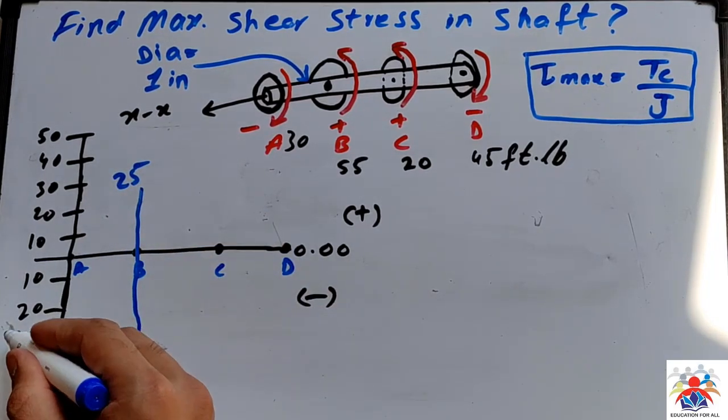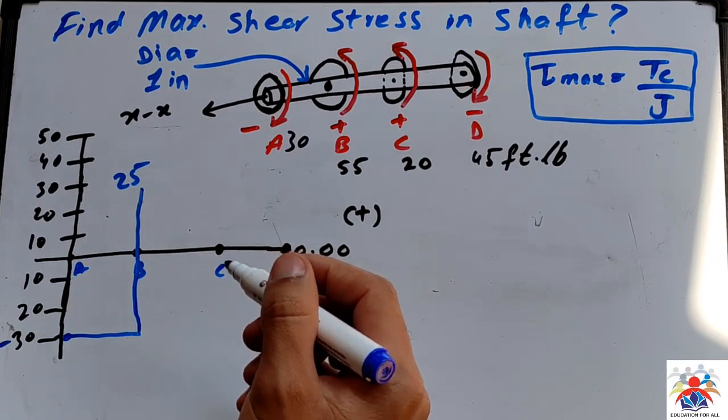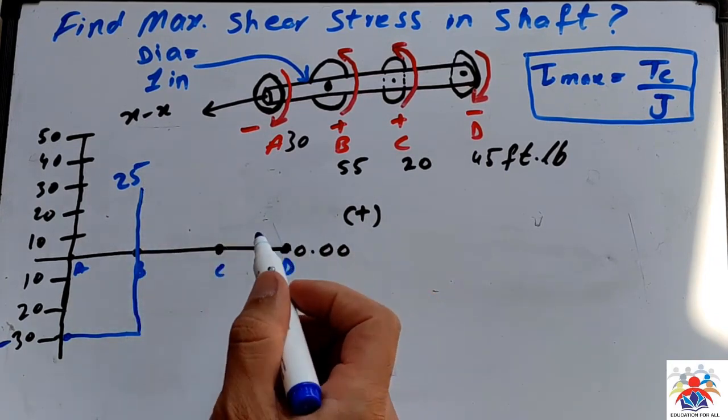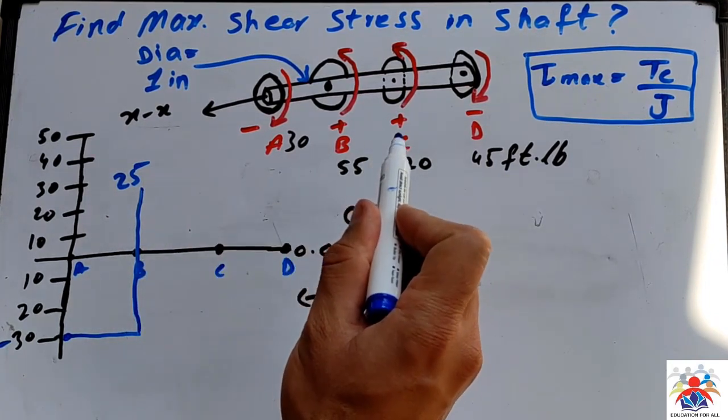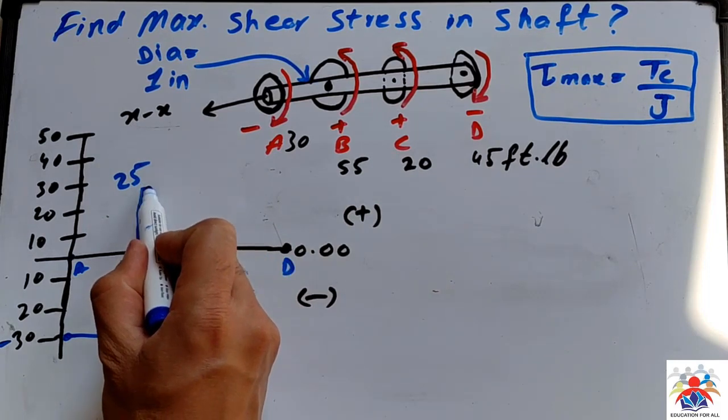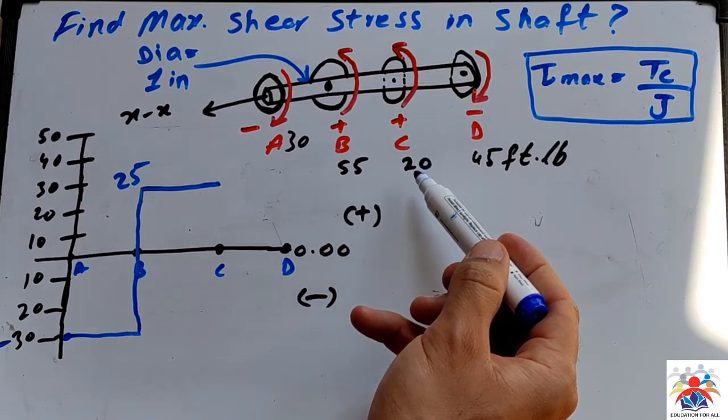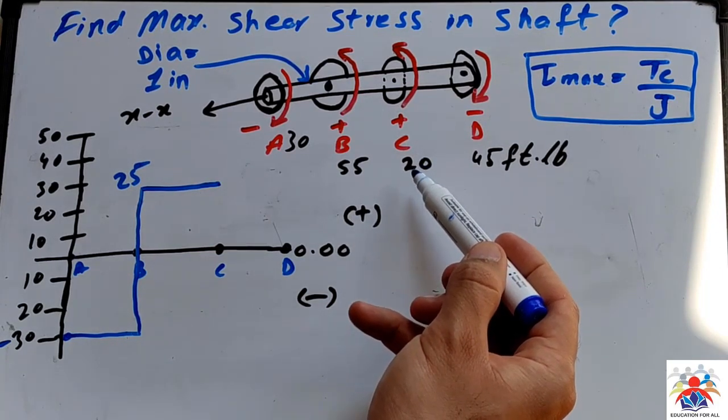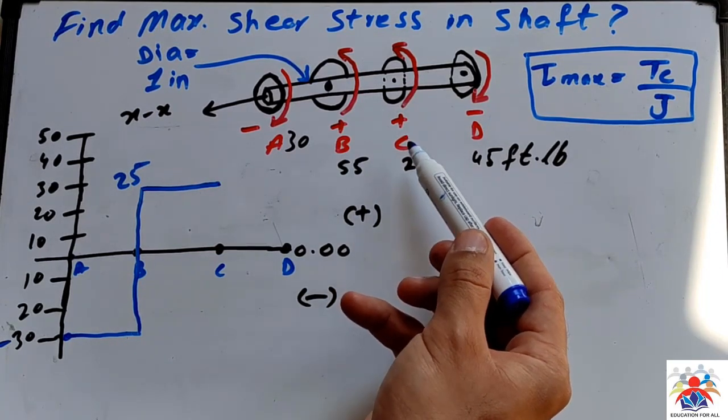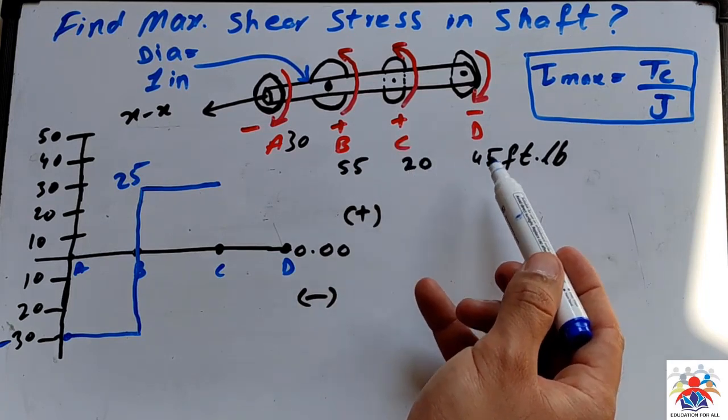And then we go to point C, of course with the indication of a straight line. And then it says at point C we have 20 foot-pounds.